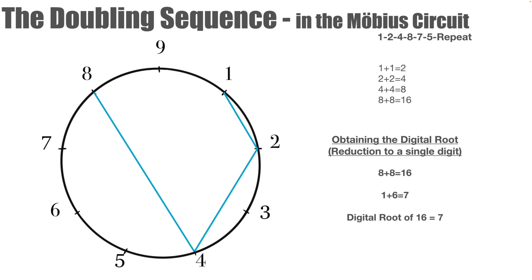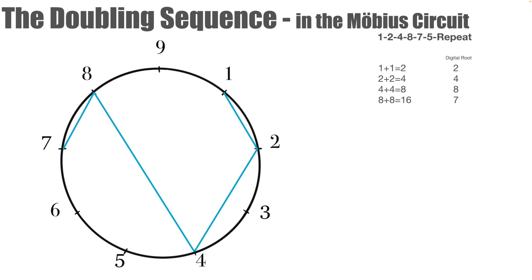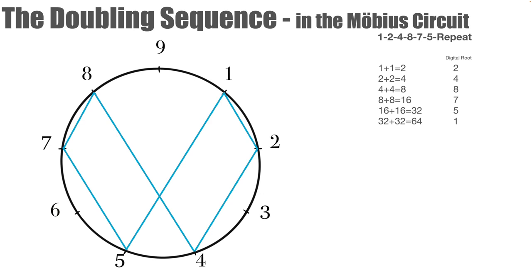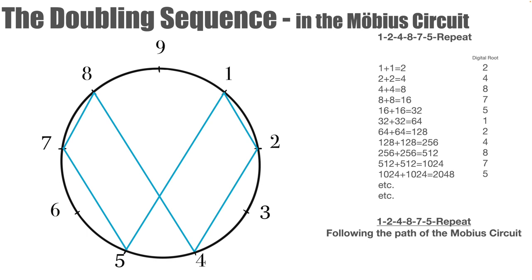Carrying on with our doubling sequence around the Abha cipher, we know that the digital root of 16 is seven. So we continue the doubling sequence by drawing a line from eight to seven. Then we double our previous number, so 16 plus 16 equals 32. We reduce the 32 to its digital root, which is five. Then we can draw a line from the seven to the five. Then we double our 32 and we get 64. The digital root of 64 is one, so six plus four equals 10, one plus zero equals one. We can draw a line from five back to one to complete our Mobius strip circuit. We can continue this doubling sequence indefinitely. So the digital root pattern will continue and follow the same pattern around the Abha cipher: 1, 2, 4, 8, 7, 5, and repeat.